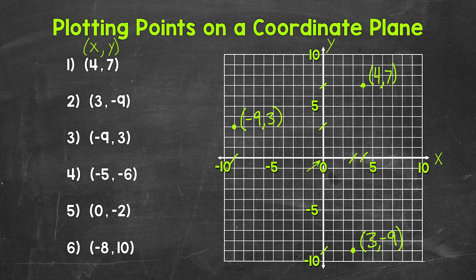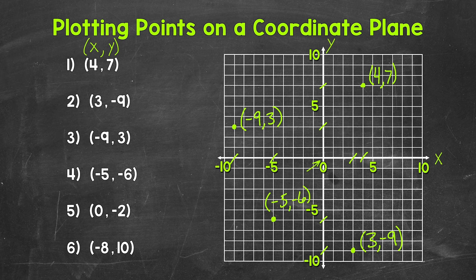Let's move on to number 4, where the x-coordinate is negative 5 and the y-coordinate is negative 6. So let's start with the x-coordinate, negative 5 — right here on the x-axis. And then we need to go down to negative 6, which is right here on the y-axis. So we plot this point right here, and this is negative 5, negative 6.